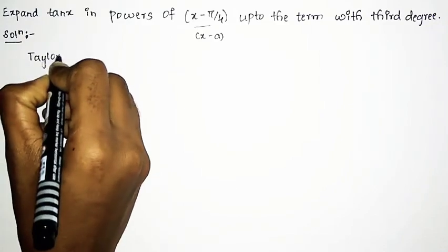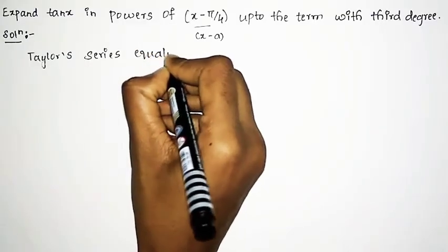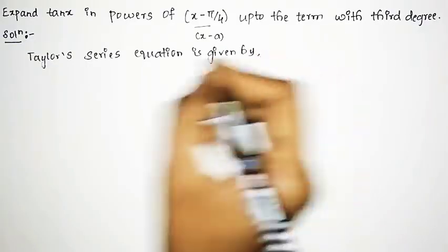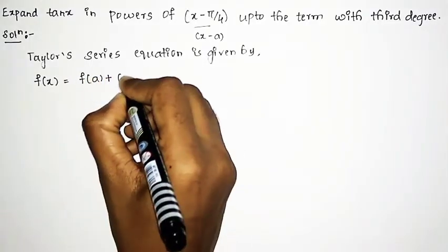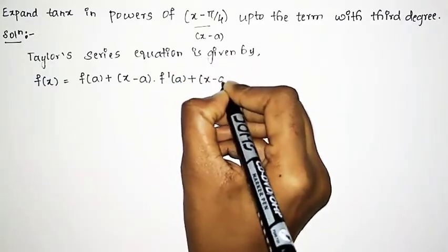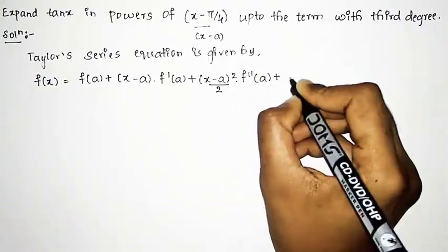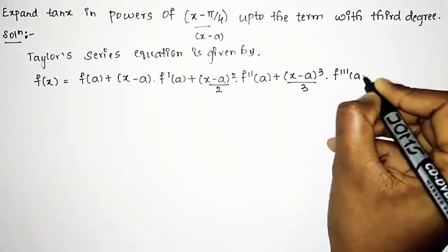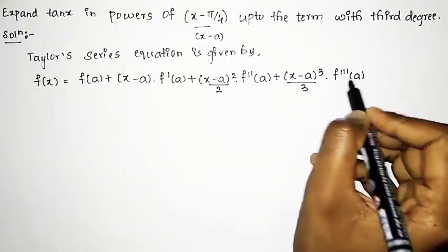The Taylor series equation is given by: f(x) = f(a) + (x minus a)·f'(a) + (x minus a)² / 2 · f''(a) + (x minus a)³ / 3! · f'''(a). This is our Taylor's equation written up to the 3rd term, so we need to find it up to 3rd degree.